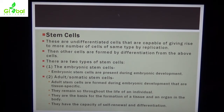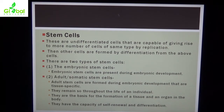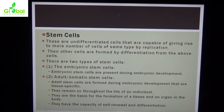Mesoderm and somites are formed by differentiation from above cells. There are two types of stem cells: embryonic stem cells and adult somatic stem cells. Embryonic stem cells are formed during embryonic development, while adult stem cells are tissue-specific and remain so throughout the life of the individual. They are the basis for the formation of tissues and organs in the body and have the capacity of self-renewal and differentiation.